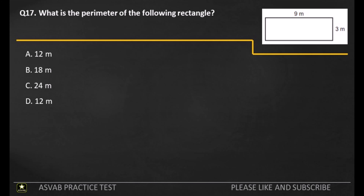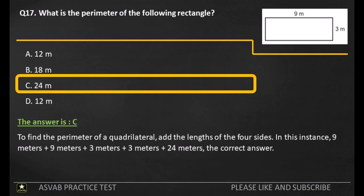Q17. What is the perimeter of the following rectangle? A: 12 meters. B: 18 meters. C: 24 meters. D: 12 meters. The answer is C. To find the perimeter of a quadrilateral, add the lengths of the four sides. In this instance, 9 meters plus 9 meters plus 3 meters plus 3 meters equals 24 meters, the correct answer.